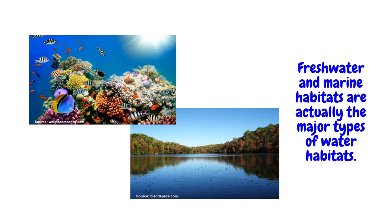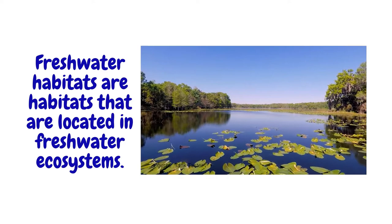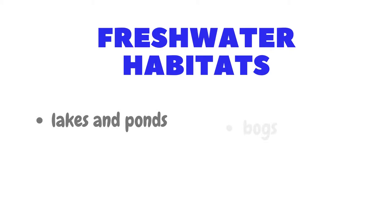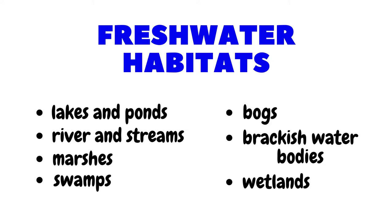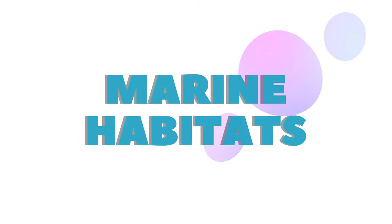Water habitats have two major types: marine and freshwater. Freshwater habitats are habitats that are located in freshwater ecosystems. Only a tiny fraction of earth's water serves as freshwater habitats in the form of rivers, lakes, swamps, and the like. Freshwater habitats include lakes and ponds, rivers and streams, marshes, swamps, bogs, brackish water bodies, and wetlands. Freshwater fishes, turtles, and snails are examples of animals that have freshwater habitats.